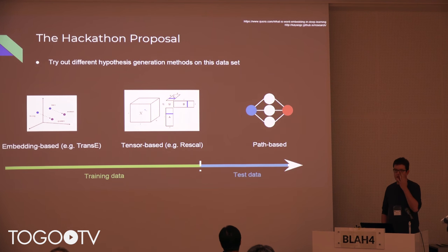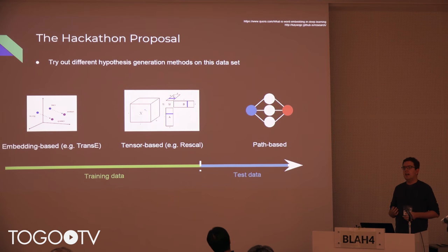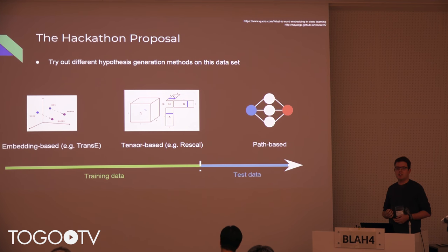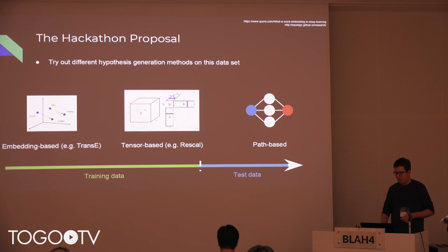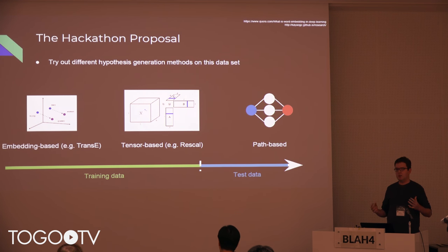The hackathon proposal is to take this dataset and try out a bunch of different ideas. The ones I'm most confident about are embedding-based approaches — very popular for knowledge base construction, which is a similar problem — and tensor-based approaches, doing a kind of decomposition. We showed recently that matrix decomposition approaches work really well for co-occurrence-based systems, so tensor-based seems like a reasonable next step. There are also metapathway or path-based approaches using random walks through a graph. If anyone has ideas they want to play with, that'd be really cool.